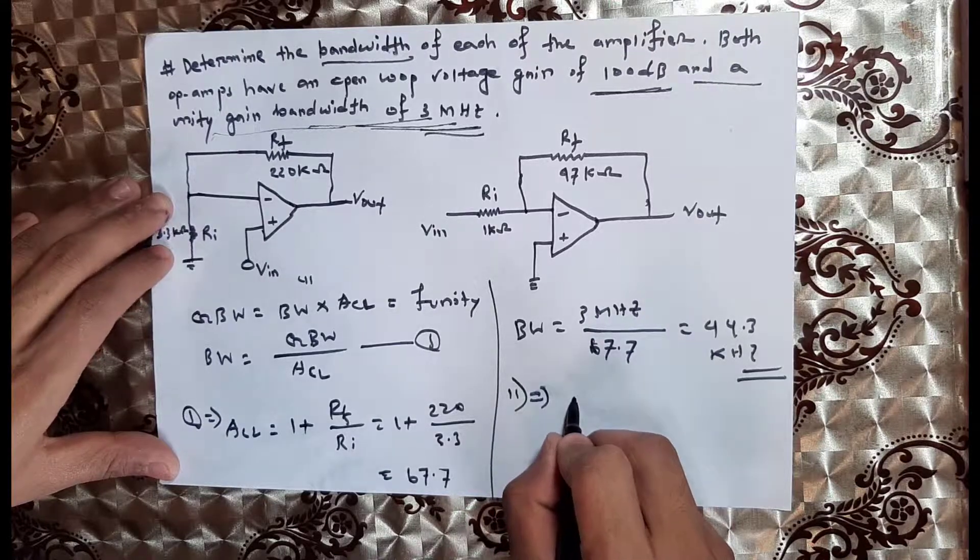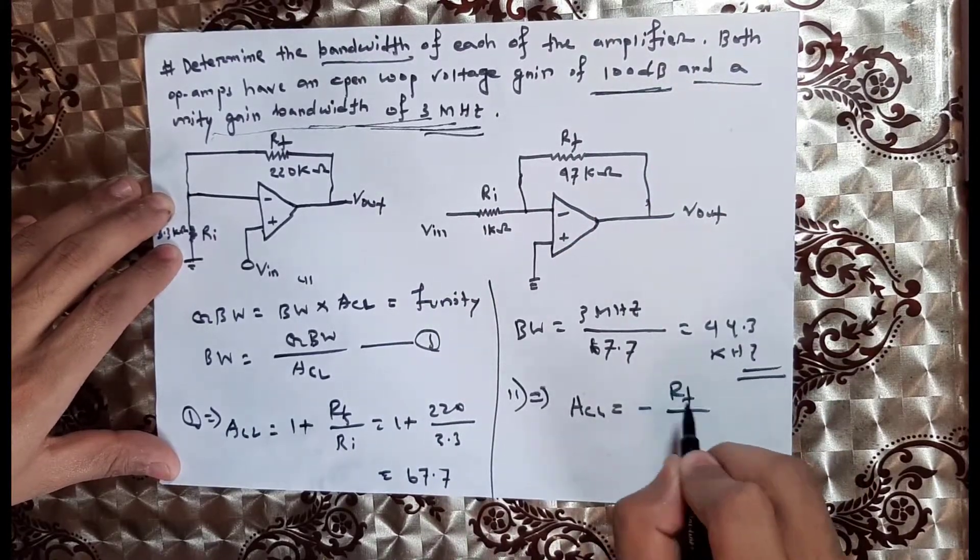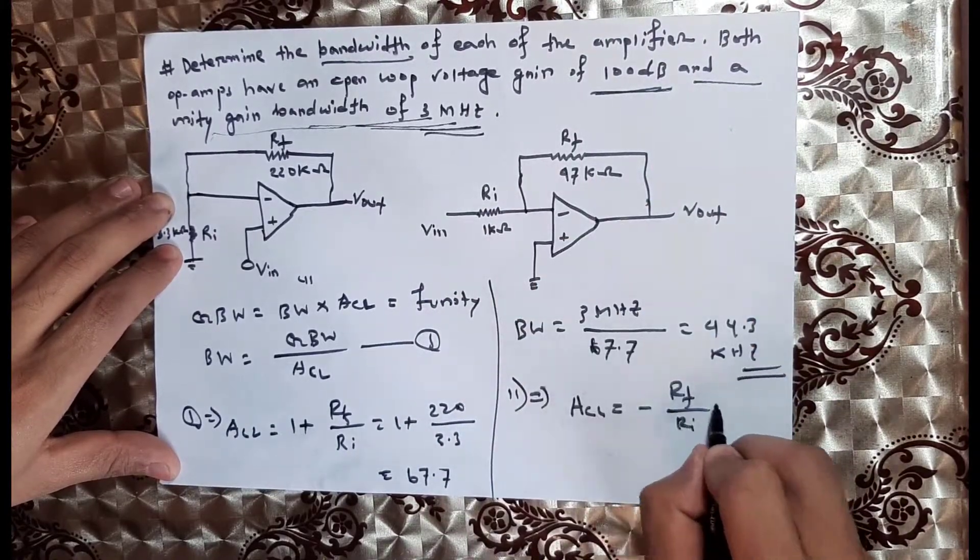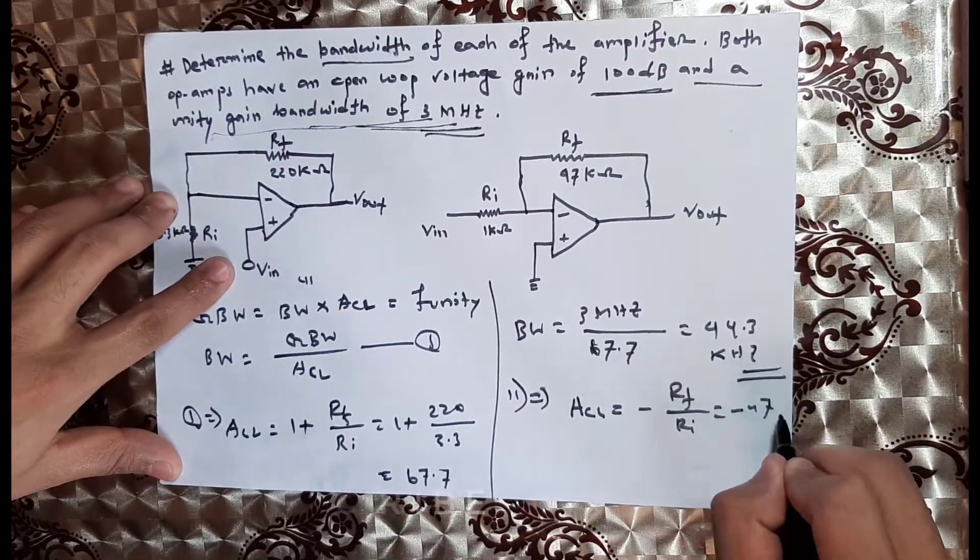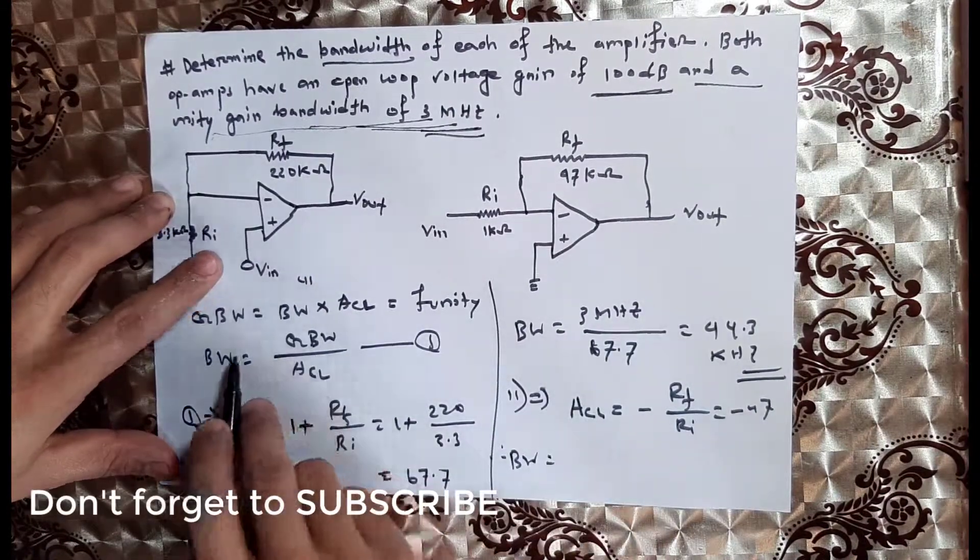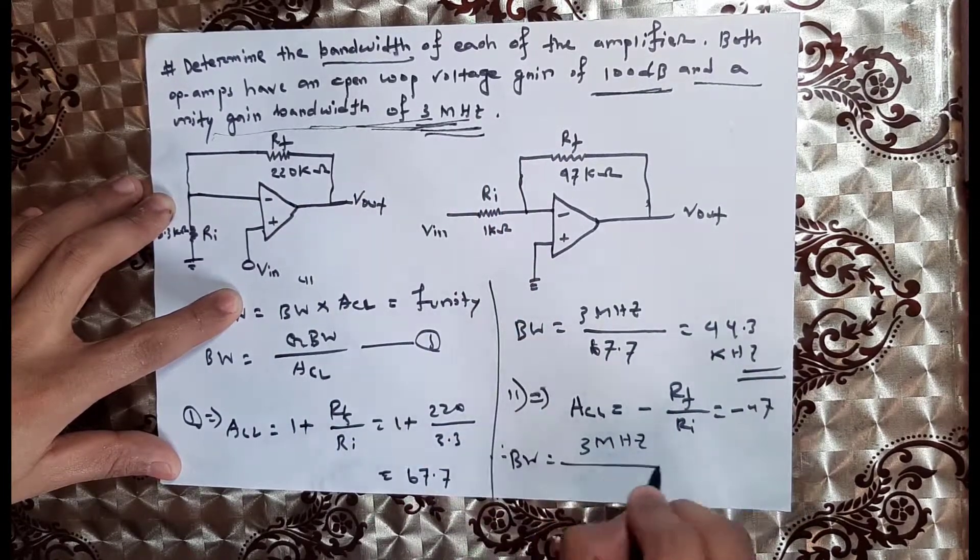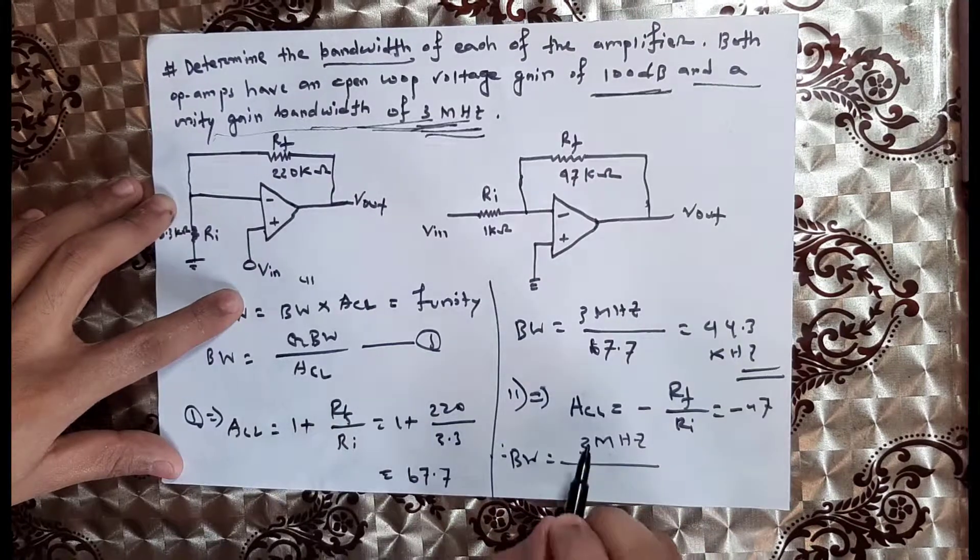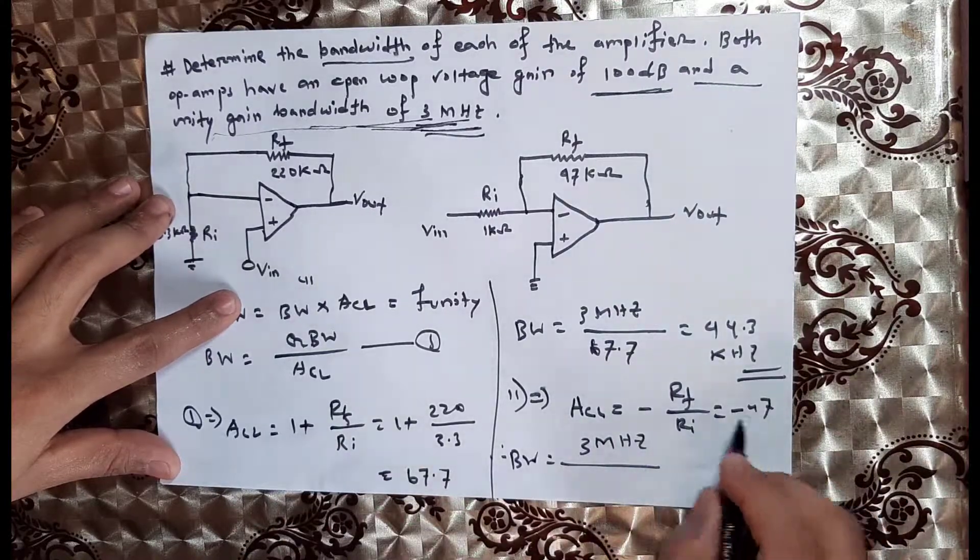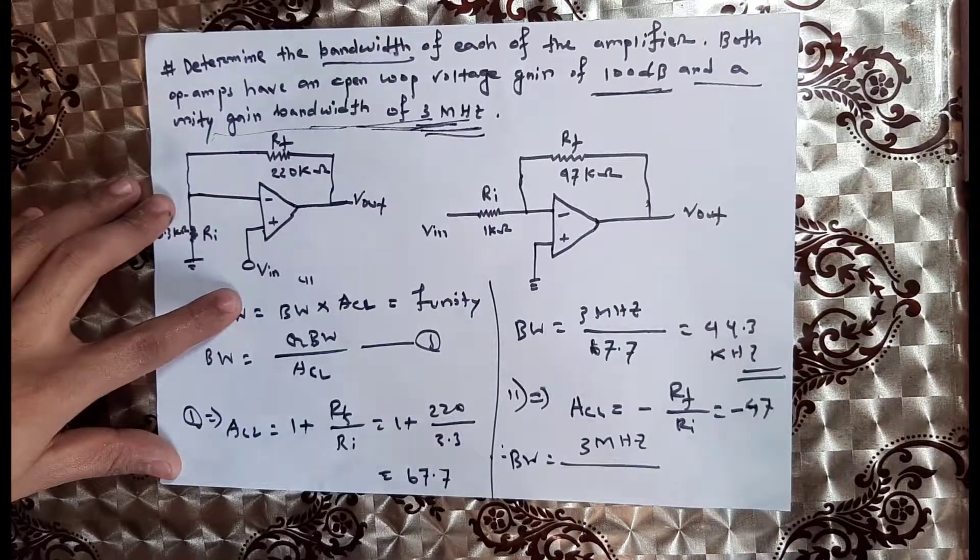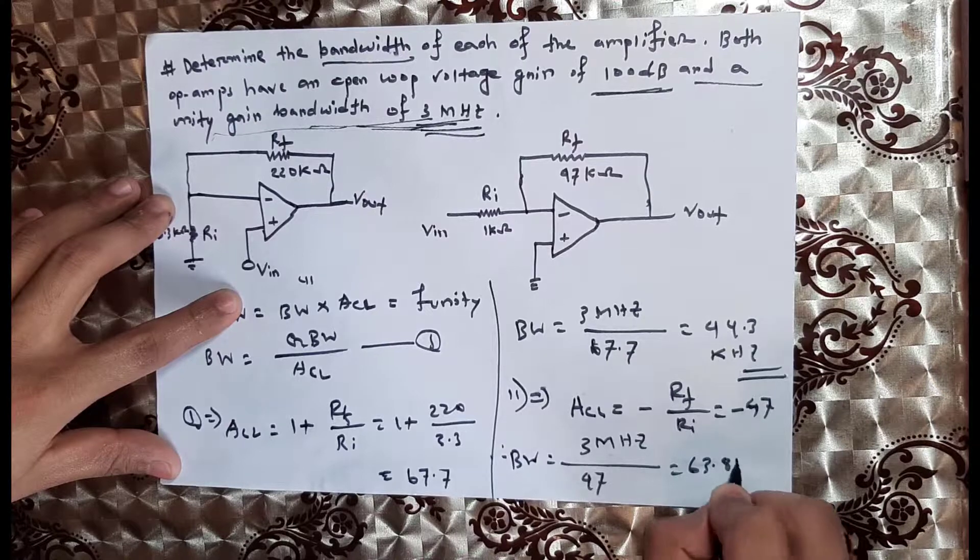For the second circuit, the inverting amplifier has a gain magnitude of RF divided by RI, which is 47 kilohms divided by 1 kilohm, so the magnitude is 47. The bandwidth equals 3 megahertz divided by 47, which gives us 63.8 kilohertz.